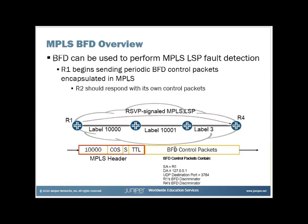Going forward, BFD control packets are transmitted from R1 to R4 over the MPLS-LSP. They have a source address of R1, a destination address of 127.0.0.1, a UDP destination port of 3784, and contain R1 and R4's BFD discriminators. By default, R1 sends control packets every 50 milliseconds, and R4 does the same with some jitter. If either one detects it is not receiving BFD packets, by default — three times the transmission timer, approximately 150 milliseconds — it declares that neighbor down.